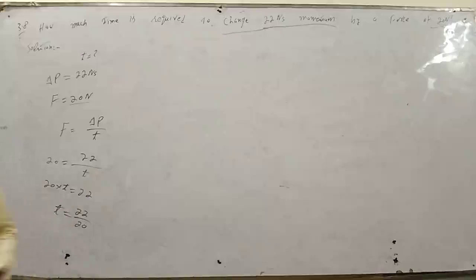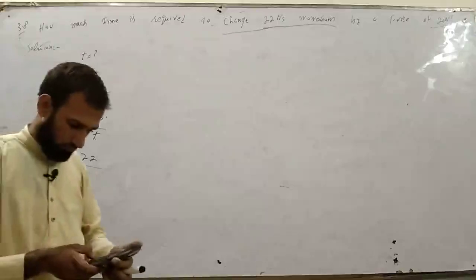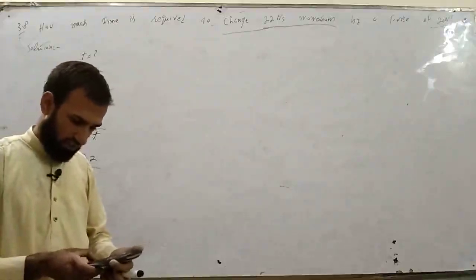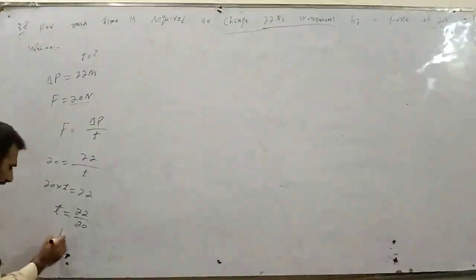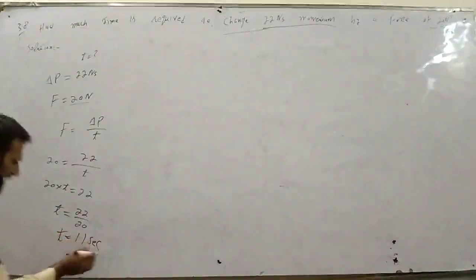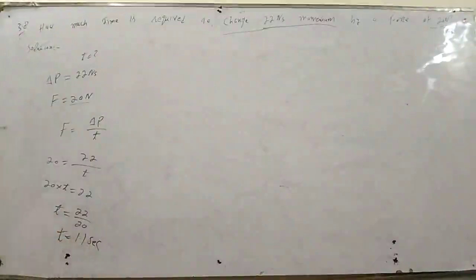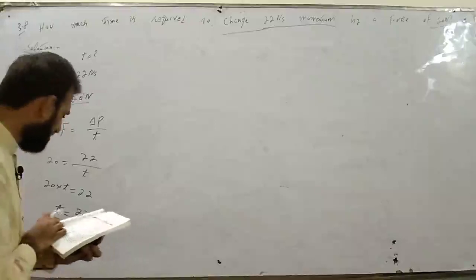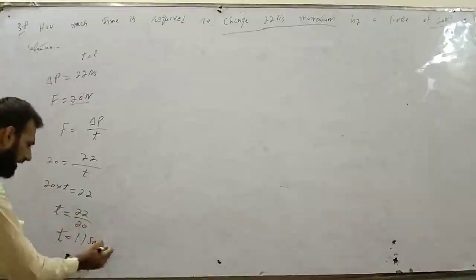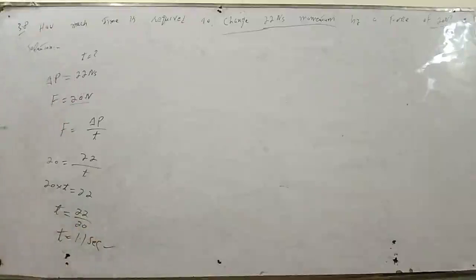22 over 20 का आंस आया 1.1। Time T is equal to 1.1 second। तो आंस आ गया 1.1 second। Book से compare कर लेता हूँ - numerical 3.8 का आंस है 1.1 second। बिल्कुल correct है आंस। यह numerical 3.8 था।